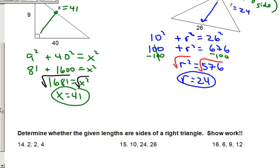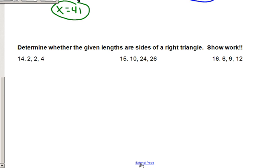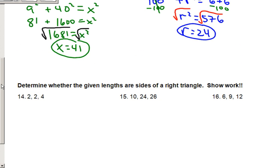Okay. The other types of problems you'll see is determine whether the side lengths are the sides of a right triangle. Well, you've got to keep in mind that the long side is a hypotenuse. So if you know that, these aren't that bad.